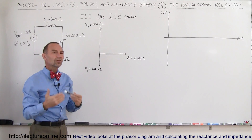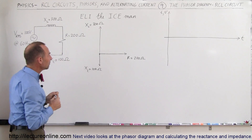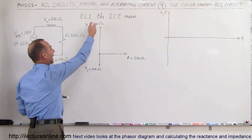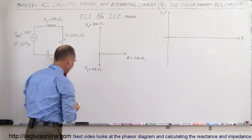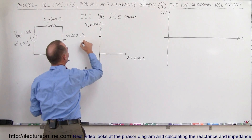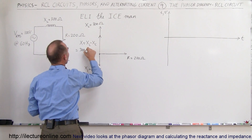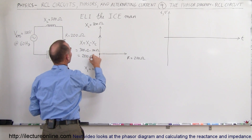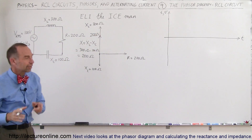Now we're going to find the total resistance of the circuit — we call that impedance. To find it, we add up these values vectorially. First, we add the reactances together. Since X sub L is bigger than X sub C, we subtract 100 from 300 and get a net reactance of 200 ohms. So X equals X sub L minus X sub C, which is 300 ohms minus 100 ohms, equaling 200 ohms — the total opposition of the capacitor and the inductor combined.